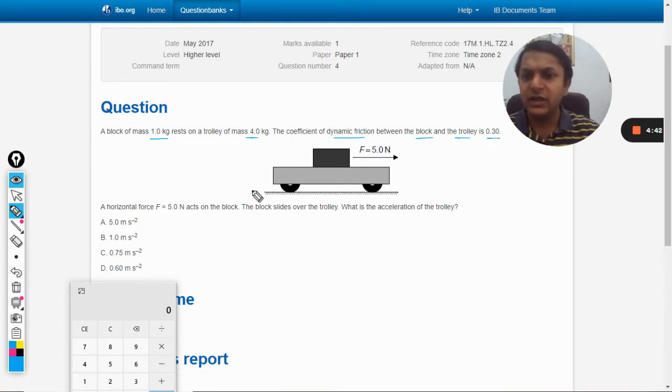A horizontal force of 5 newton acts on the block. The block slides over the trolley. What is the acceleration of the trolley? So the first thing that we must notice is that there is no friction between the trolley and the floor.